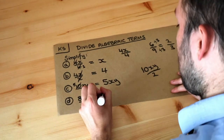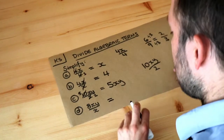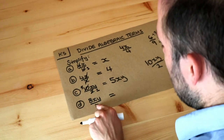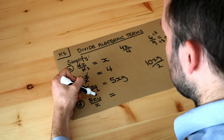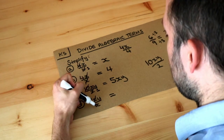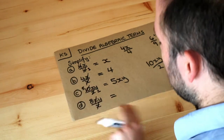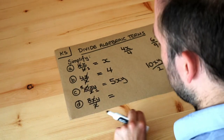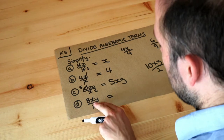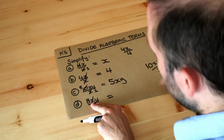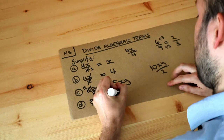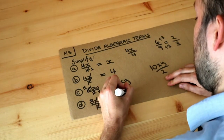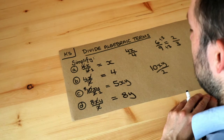And what about the last one? Again, we've got an x common to top and bottom — I can just cross those out. And because there's nothing left at the bottom, it's effectively one. So you just get eight y. So that is the final answer.